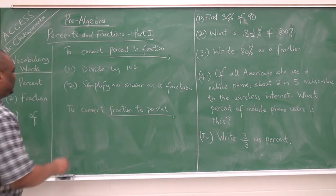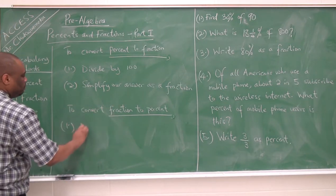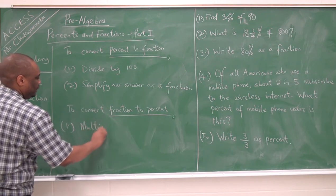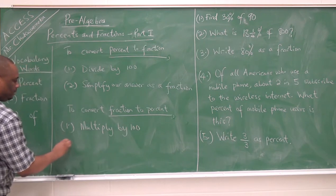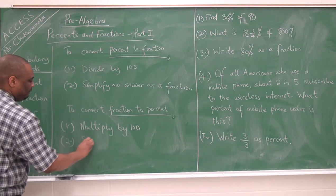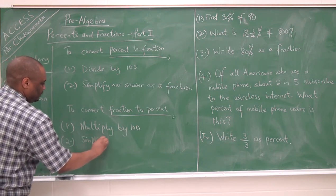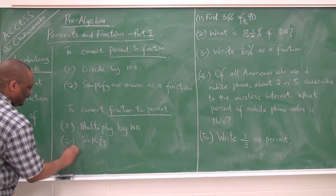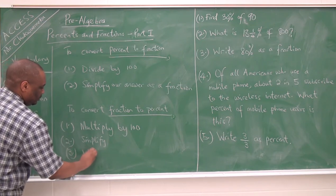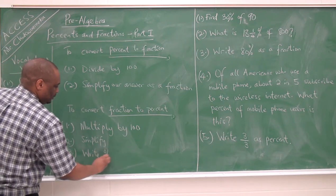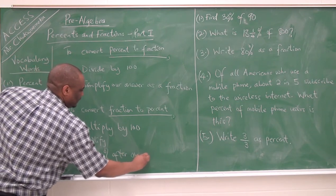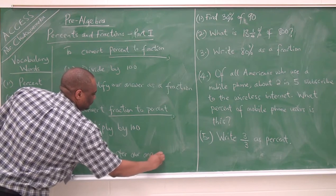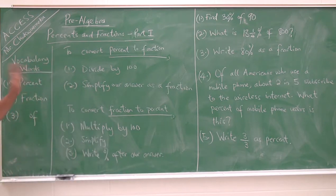To convert fraction to percent, we multiply by 100, then we simplify, and then we write percent after our answer. That is the basics.